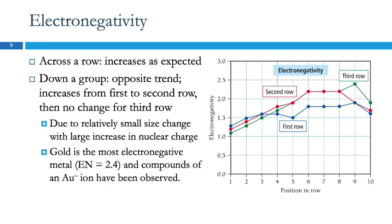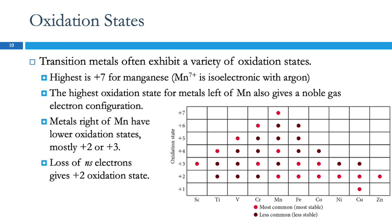Gold compounds containing a gold anion have actually been observed. For oxidation states, the transition metals are the ones that need Roman numerals because they can make lots of different ions. Manganese really goes nuts here — manganese can be +2, +3, +4, +5, +6, or +7. For metals to the left of manganese, the highest oxidation state gives a noble gas electron configuration, which makes them especially stable. Ones to the right tend to have lower oxidation states, and +2 is really common because it represents losing those two s electrons.